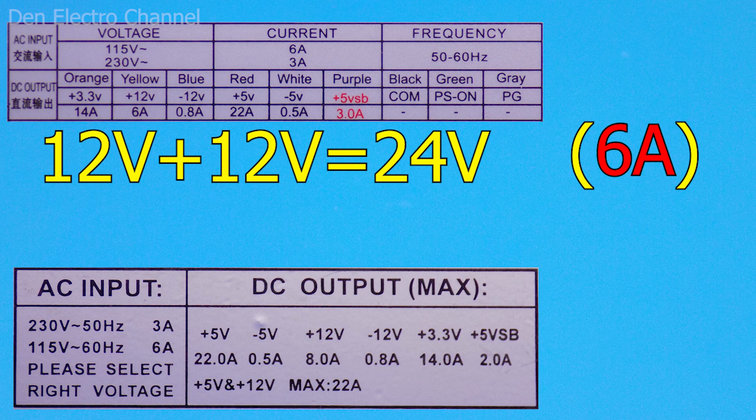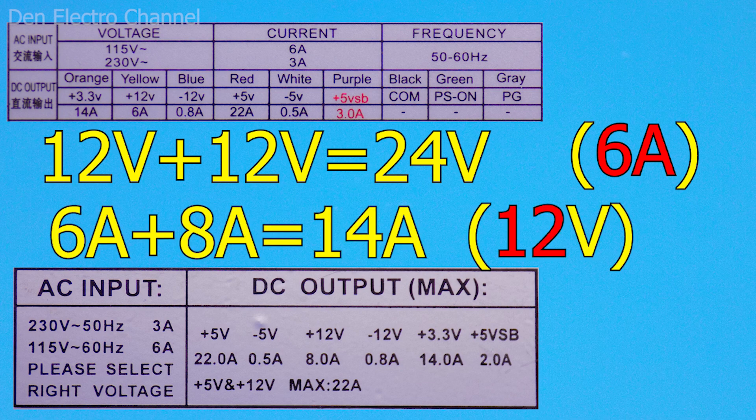In the second case, when connecting the power supplies in parallel, we can get a large current. For example, if we connect the 12 volt lines, then the current they give off is summed up. This is all ideal of course. In reality, the output characteristics will be a little smaller. I will explain later why this happens.